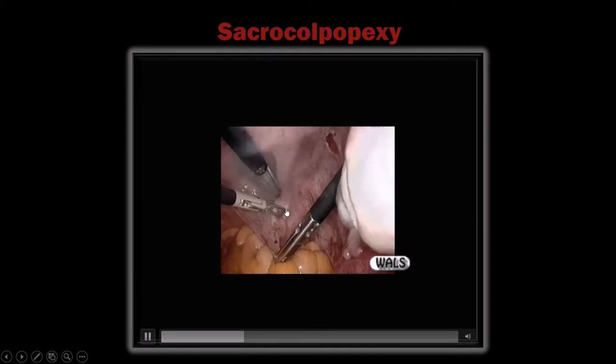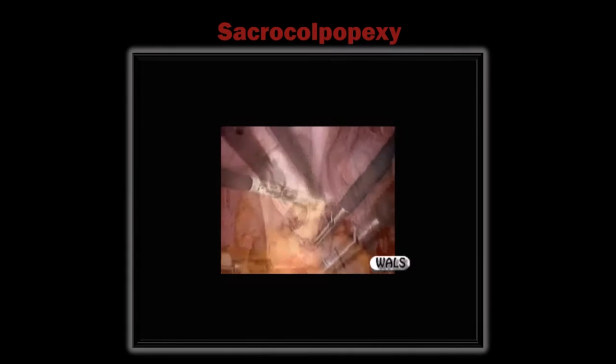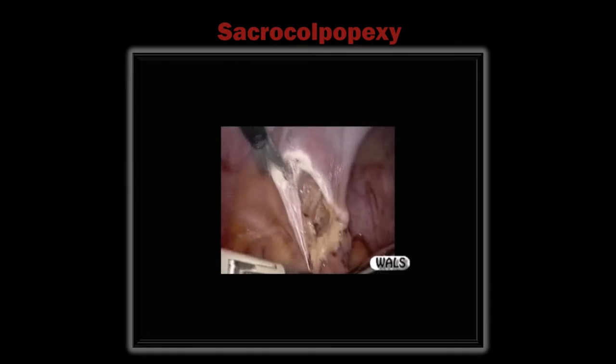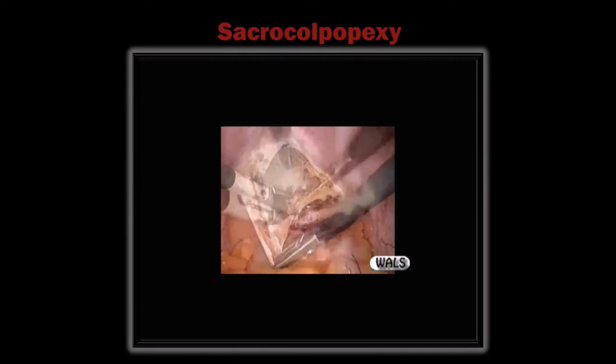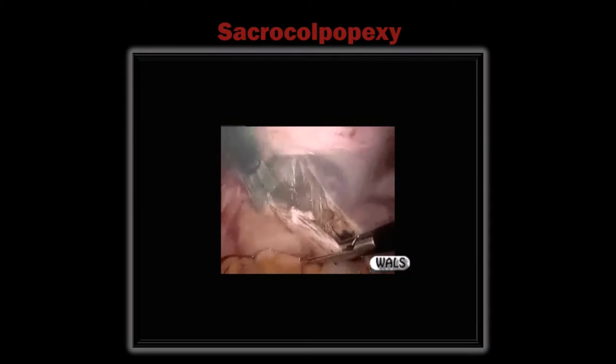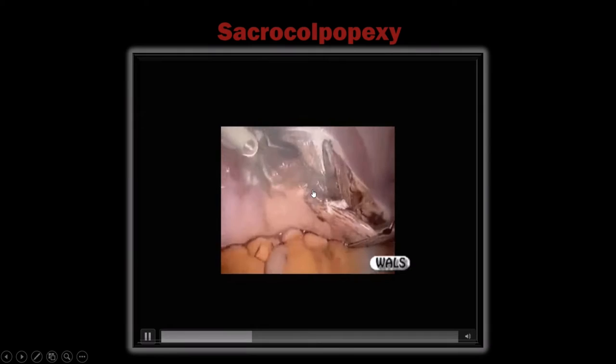The peritoneum of the posterior cul-de-sac is opened. Only the peritoneum should be separated — the rectum must not be touched, no other tissue should be dissected. Take care to avoid an accidental colpotomy. Colpotomy is not possible here because nothing is being pushed into the vagina, so the vagina remains loose and concave, not under tension.